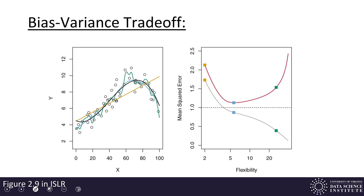Now let's talk about the bias-variance trade-off in more detail. Here we have figure 2.9 from our textbook. On the left-hand side we have a regression problem: open circles represent data points and three different regression methods give three different models — one in gold, one in blue, one in green. The goal is to predict output values y as a function of input values x. On the right-hand side, the x-axis shows the flexibility of the model — how much the model is allowed to wiggle, how far it can deviate from a linear function.